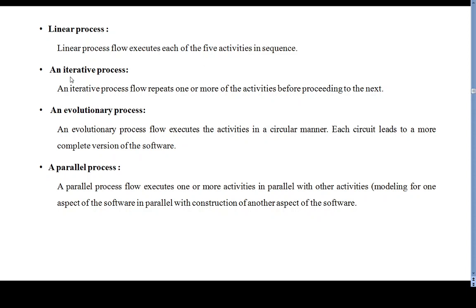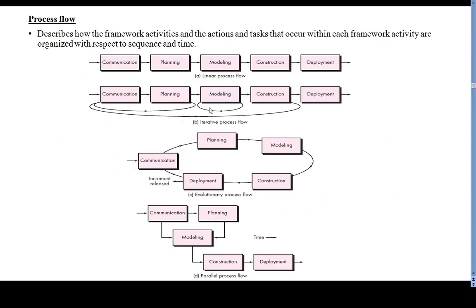The next type is iterative process flow. An iterative process flow repeats one or more of the activities before proceeding to the next. So an iterative process flow repeats one or more activities before moving forward.